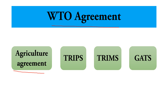The second agreement is TRIPS — Trade Related Aspects of Intellectual Property Rights. The areas of intellectual property covered include copyright and related rights, and the rights of performers and producers of sound recordings.